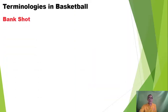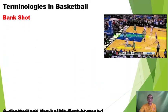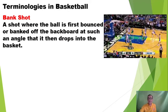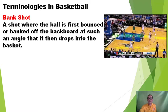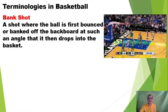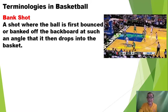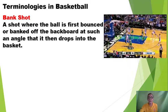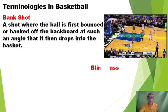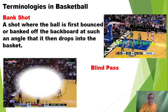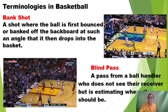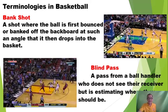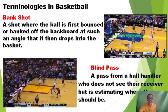Then we have the bang shot. The bang shot is a shot where the ball first bounces or banks off the backboard at such an angle that it then drops into the basket. The backboard can help you produce a point when you play basketball. The blind pass — it is a pass from a ball handler who does not see the receiver but is estimating where they should be.